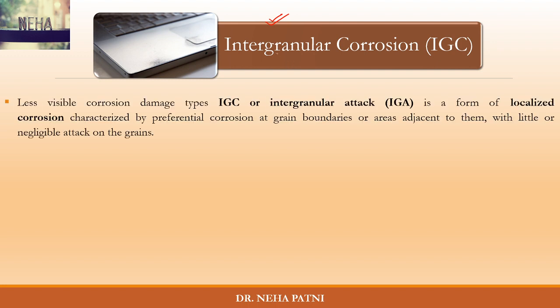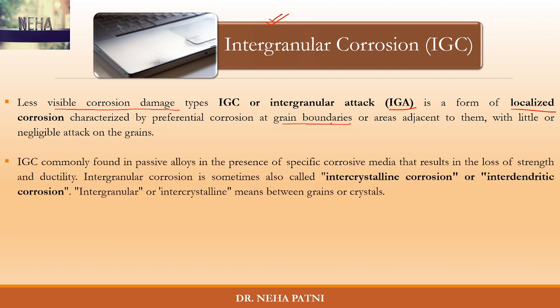Intergranular corrosion is a less visible corrosion damage — you are not able to see it from the surface, but it happens inside the surface. It is also known as intergranular attack, or IGA. It's a form of localized corrosion that intensifies at a particular place, giving preferential attack at the grain boundaries. The attack happens at the boundary area or the area near to it, while the entire grain center remains almost neutral.